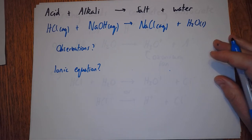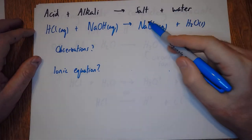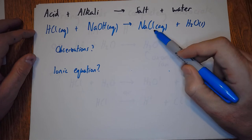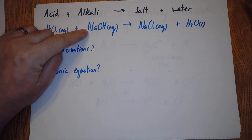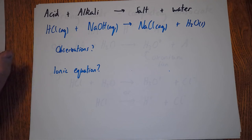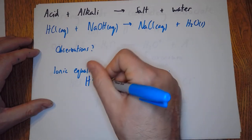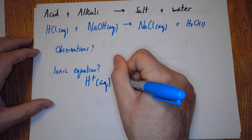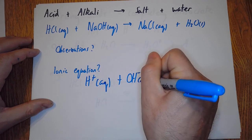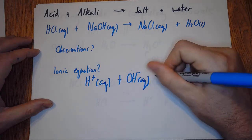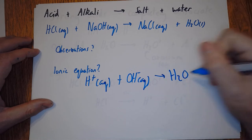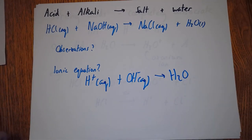Ionic equation - all this is aqueous on this side, and these parts are aqueous over here as well. We've got the sodium ion here aqueous, we've got the chloride ion here aqueous, so we take them out. We're left with the H+ ion plus OH- ion, which goes to H2O. Basically, neutralization.